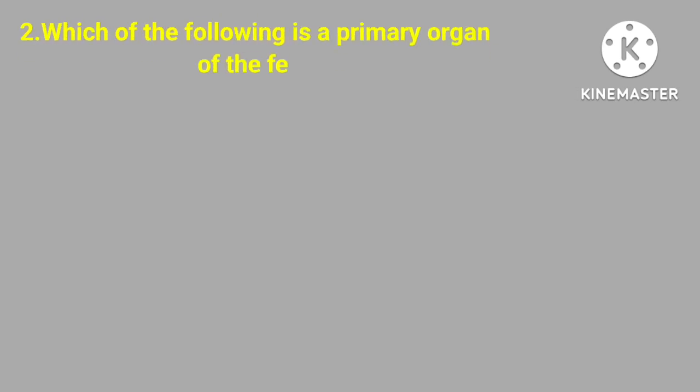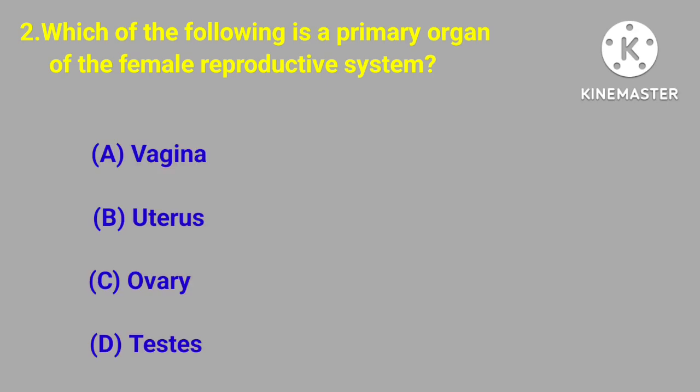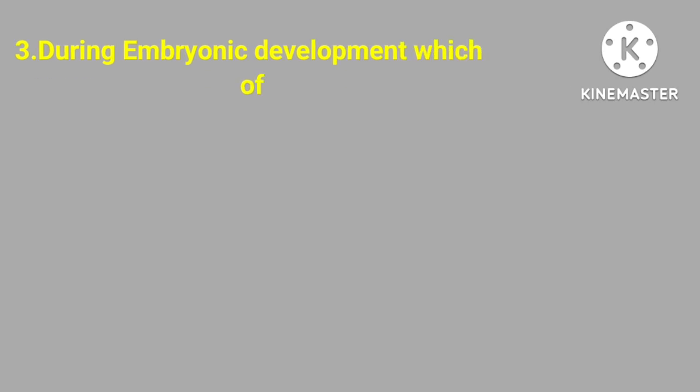Question number two. Which of the following is a primary organ of the female reproductive system? Vagina, uterus, ovary, testes. Correct answer is ovary.